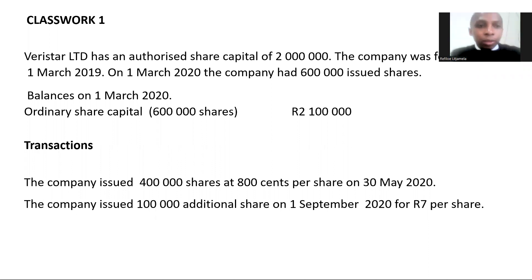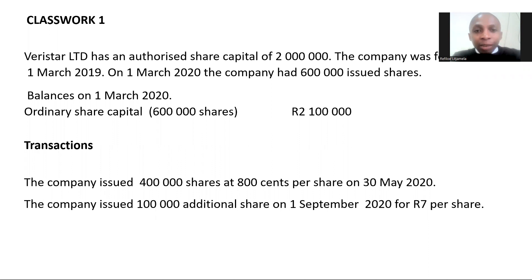Let us look at Example 1. Very Style Limited has an authorized share capital of two million rand. The company was founded on the 1st of March 2019. On 1 March 2020, the company had 600,000 issued shares — so at the beginning of March 2020, those 600,000 shares had already been issued and are no longer with the company.